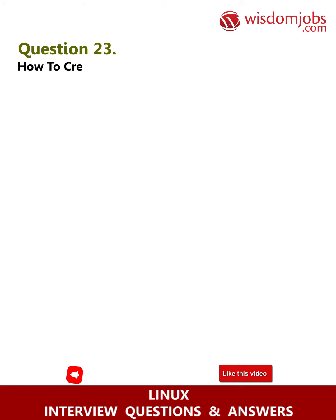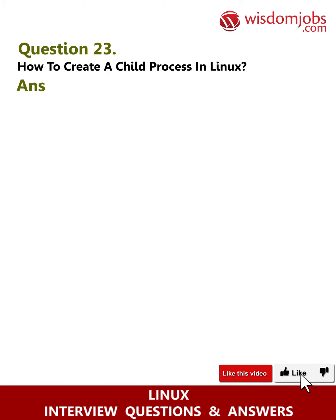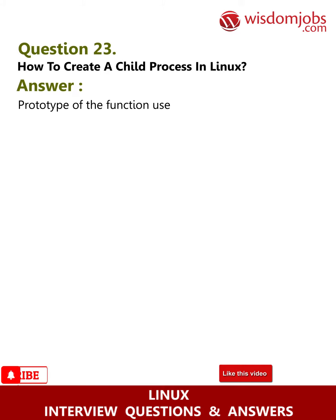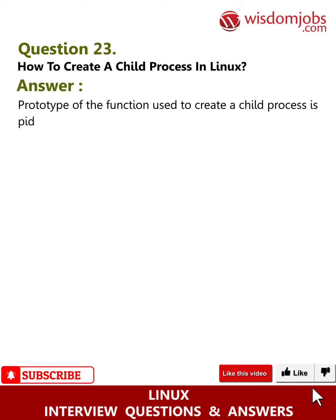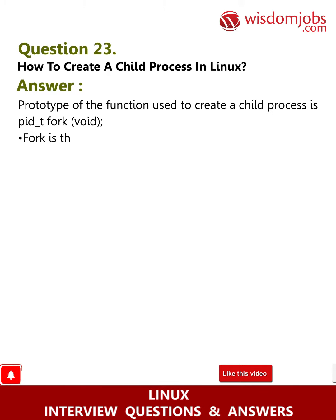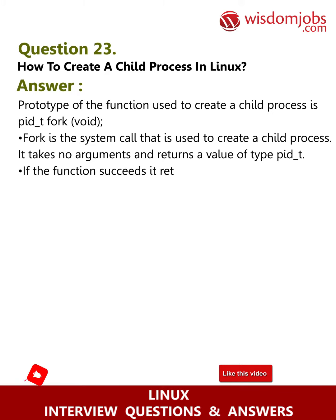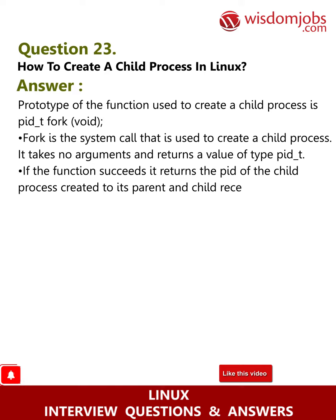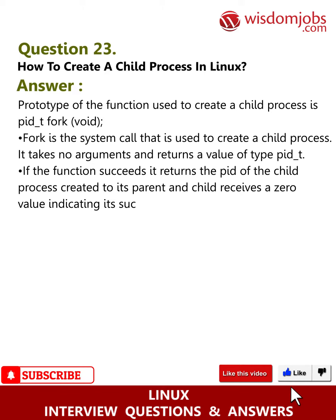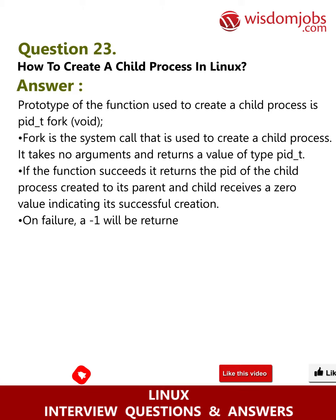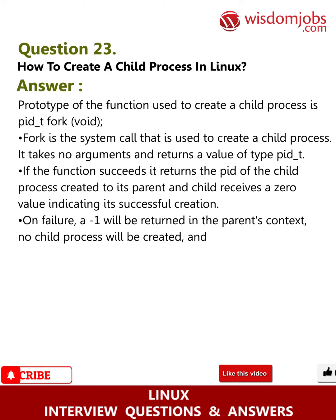Question 23: How to create a child process in Linux? Answer: The prototype of the function used is: pid_t fork(void). fork() is the system call used to create a child process; it takes no arguments and returns a value of type pid_t. If the function succeeds, it returns the PID of the child process created to the parent, while the child receives a zero value indicating its successful creation.